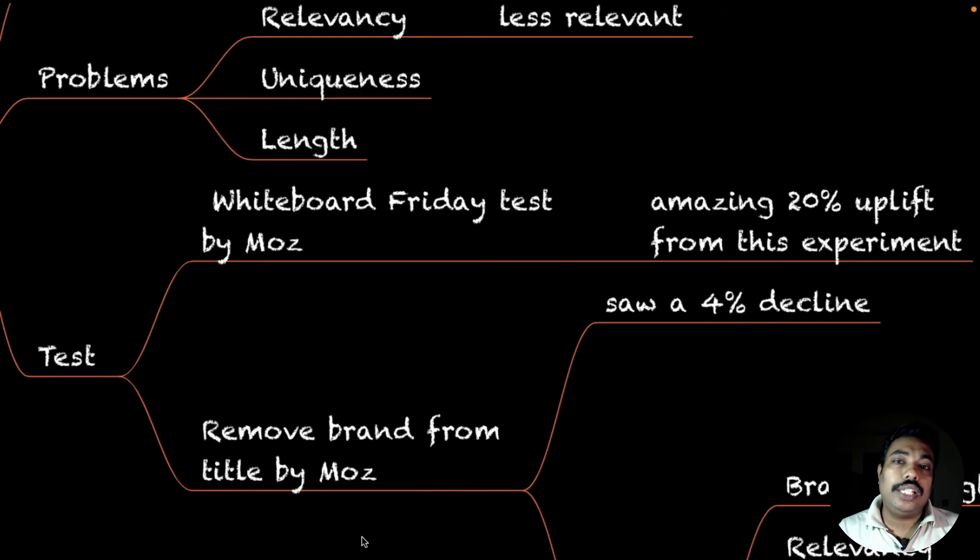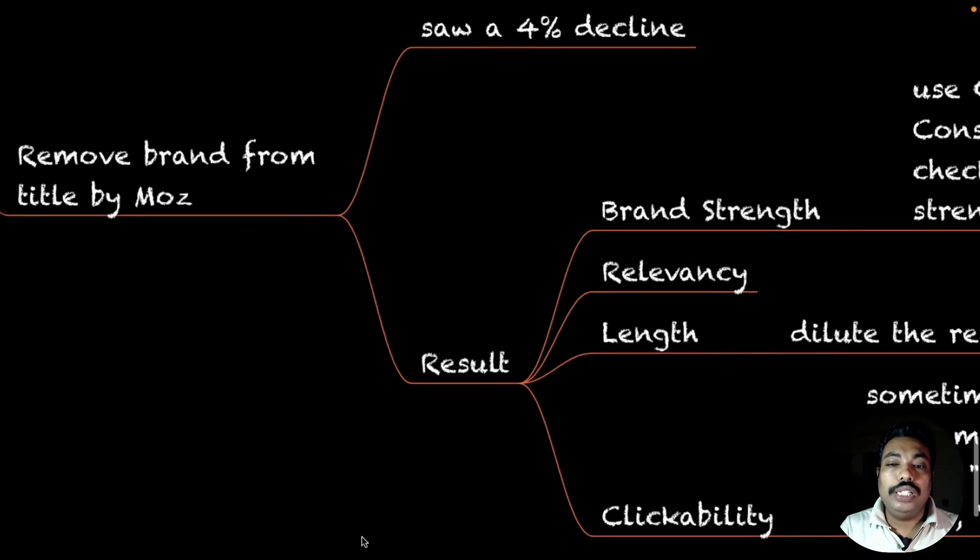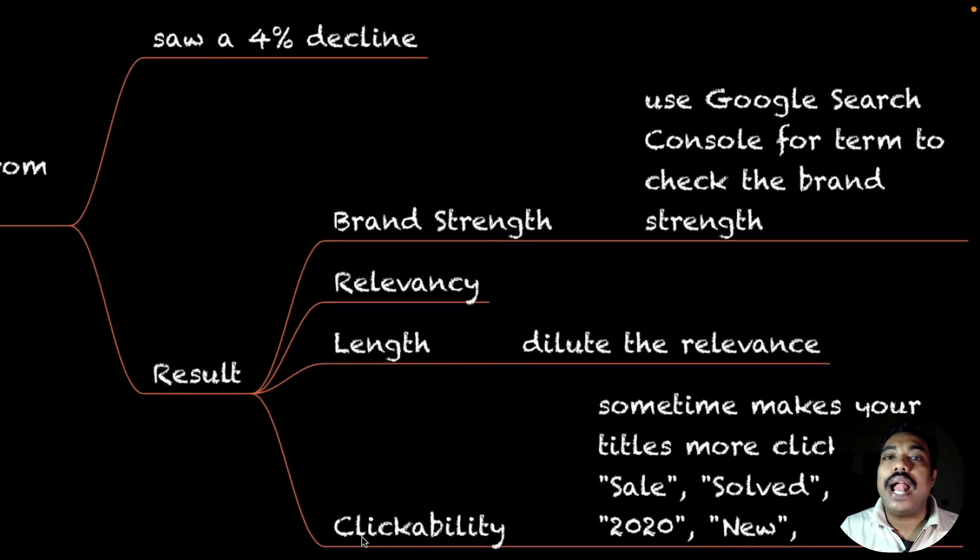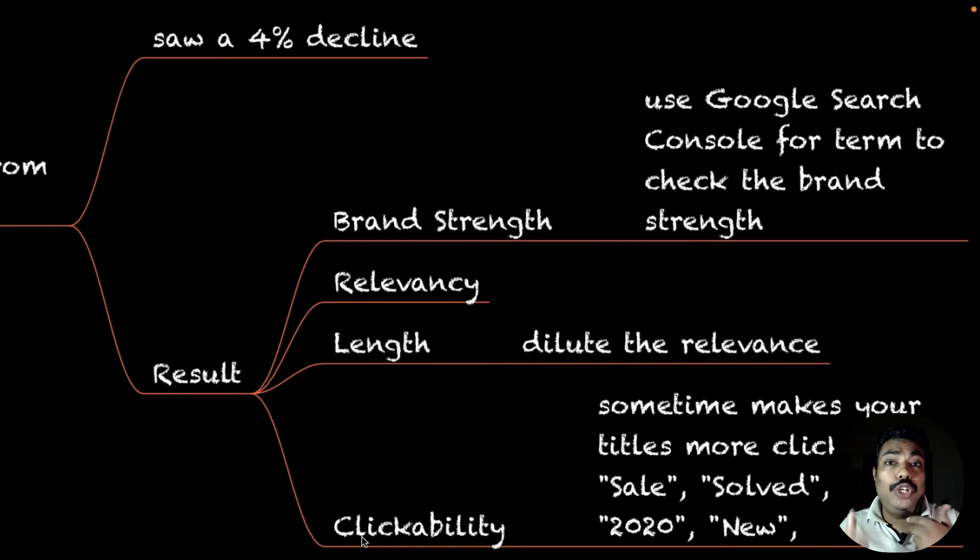When there's another test they did, they removed brand from Moz. Like Moz brand name removed. What they saw was a 4% decline in that traffic. So you have a test - why did Moz drop but Whiteboard Friday use it and go up high?